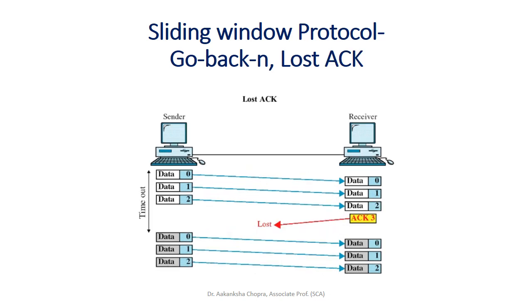For Go-Back-N with a lost acknowledgement, if the acknowledgement gets lost — say ACK 3 is lost — after some time, the sender will re-send all three packets again.